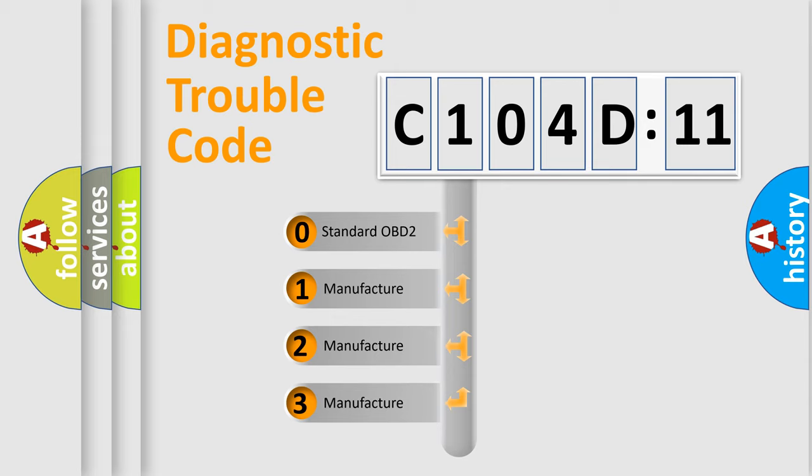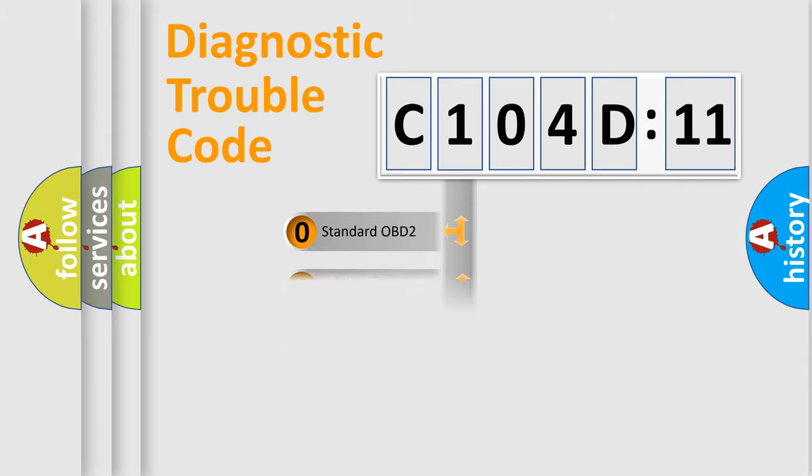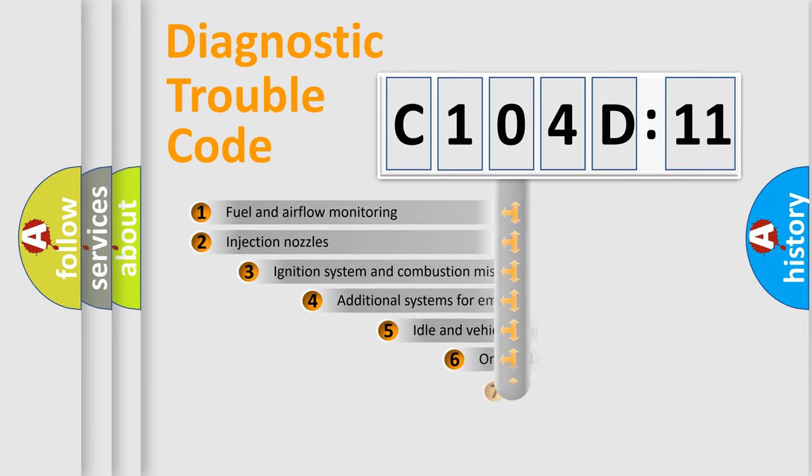If the second character is expressed as zero, it is a standardized error. In the case of numbers 1, 2, 3, it is a more manufacturer-specific expression of the car-specific error.